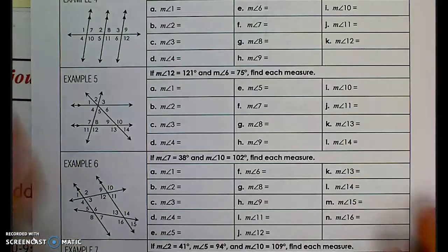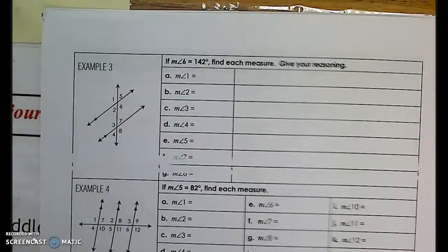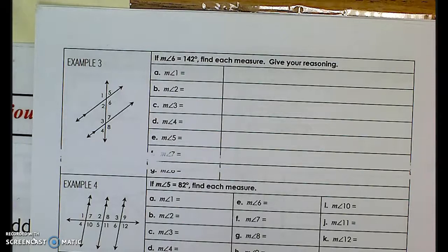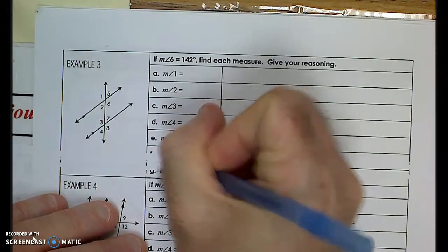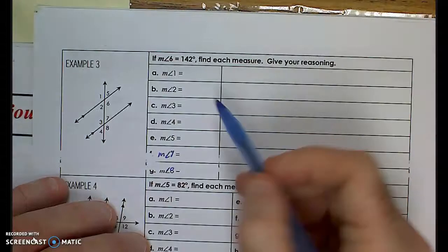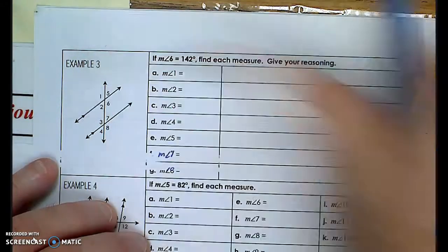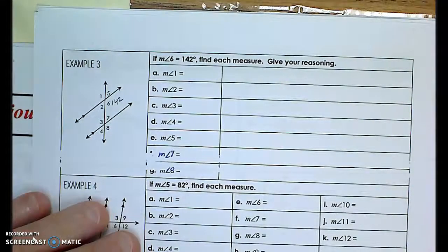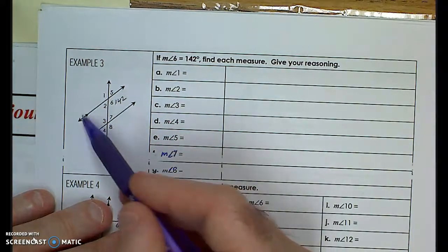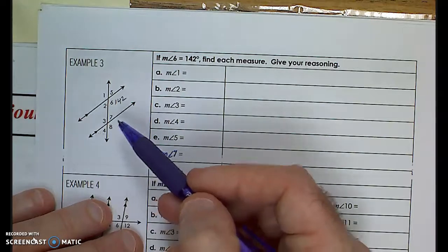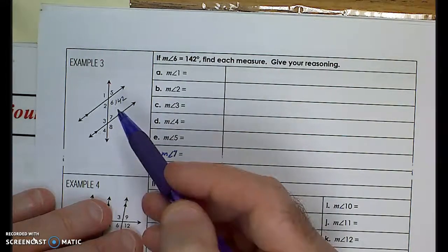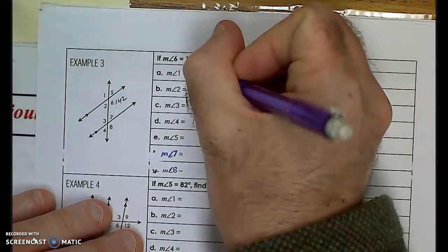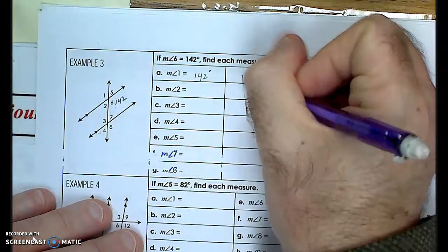Let's go to the next page and use our skills to figure out some answers. We're given that the measure of angle six is 142 degrees, and we want to determine the measure of all the others. I know these two lines are parallel — I first have to determine that, otherwise I can't use angle pairs. Angle six and angle one are vertical, and vertical angles are congruent, so angle one is 142 degrees — vertical to angle six.